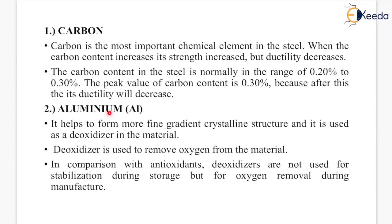The next element is aluminium. It helps to form a more fine-grained crystalline structure and it is used as a deoxidizer in the material. A deoxidizer is used to remove oxygen from the material. In comparison with antioxidants, deoxidizers are not used for stabilization during storage but for oxygen removal during manufacture.